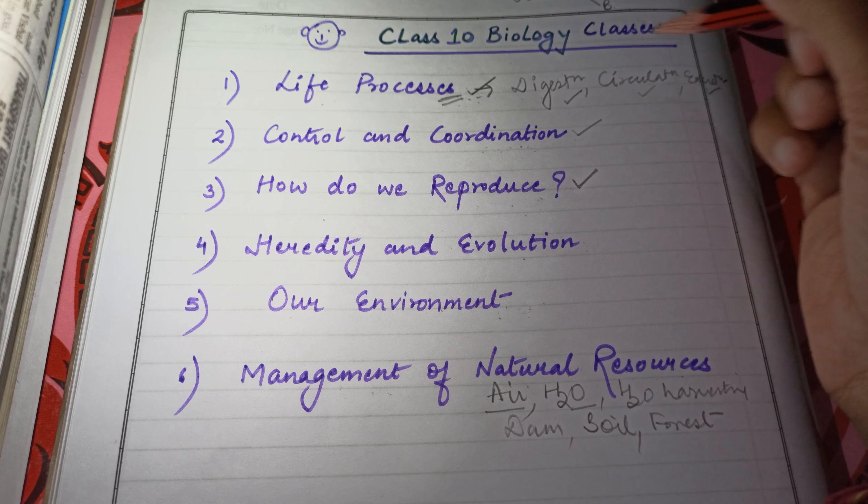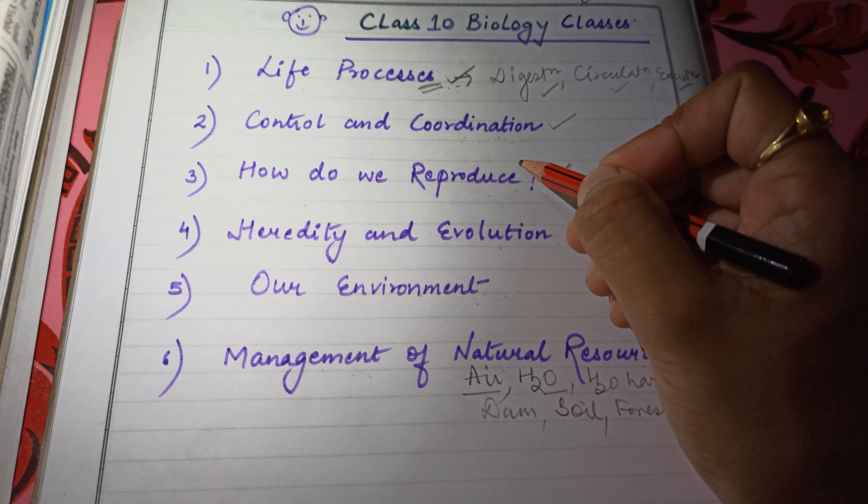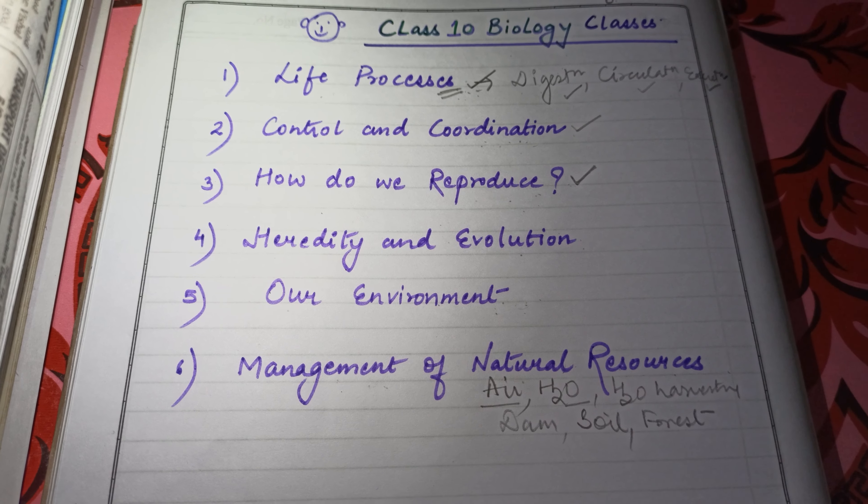In our bio section we have 6 chapters. The first chapter is Life Processes, second is Control and Coordination, third is How Do We Reproduce, fourth is Heredity and Evolution, fifth is Our Environment, and sixth — last but not the least — is Management of Natural Resources. We are introducing these chapters to clear your concepts and help you remember the technical terms involved in all six chapters.